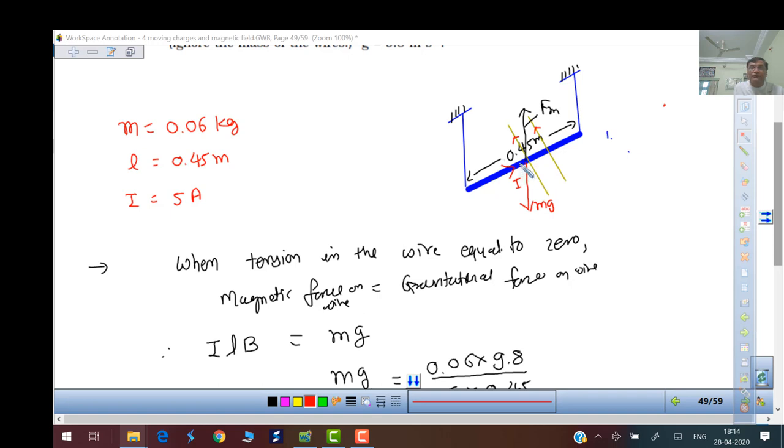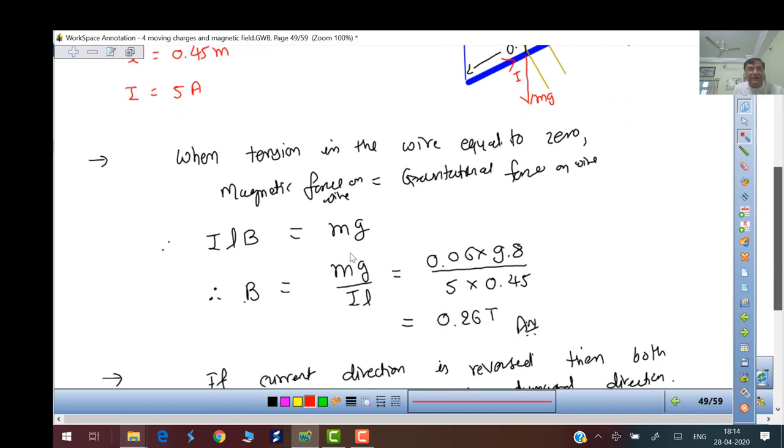So ILB equals mg. We have calculation of magnetic field. M is 0.06 kg, gravity is 9.8, current is 5 amperes, and length is 0.45 meters. If you simplify it, you get 0.26 Tesla. The field perpendicular to the wire, using IL cross B.